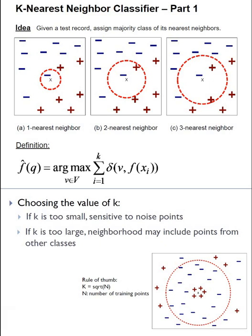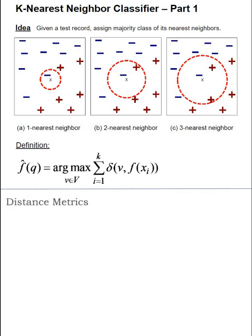And one of the rules of thumb for choosing K is we want to choose it based on the square root of N. So N is the number of training points. If N is the number of training points, K can be chosen as square root of N.